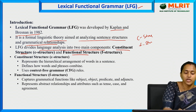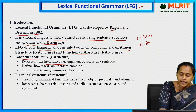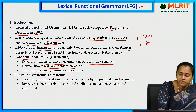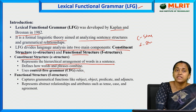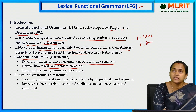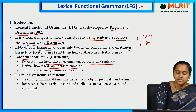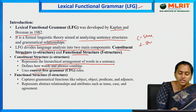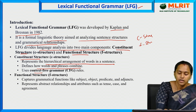What is the meaning of C-structure? It represents the hierarchical arrangement of words in a sentence and defines how words and phrases combine. It uses context-free grammar rules — the same context-free grammar rules we discussed in the previous video — to define how words and phrases are combined.